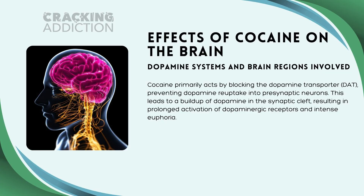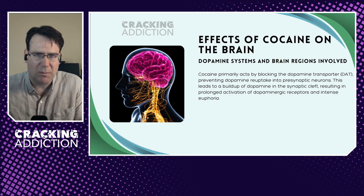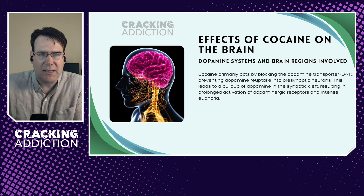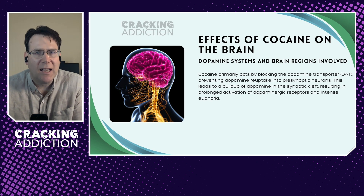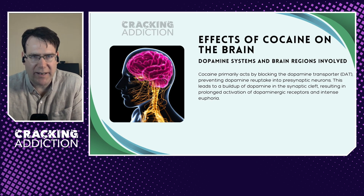Firstly, the dopamine system and cocaine's mechanism of action. Cocaine primarily acts by blocking the dopamine transporter, known as DAT. Blocking DAT prevents dopamine reuptake into the presynaptic neuron — the neuron that released dopamine in the first place. DAT is effectively a vacuum cleaner in the synaptic space that sucks up all the dopamine that was released. So if you block DAT, if you switch off the vacuum cleaner, you get a buildup of dopamine in the synaptic cleft, resulting in a prolonged activation of dopaminergic receptors and increased euphoria.